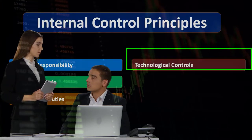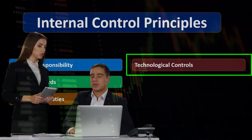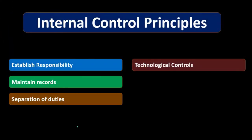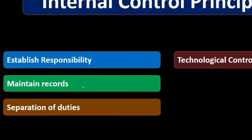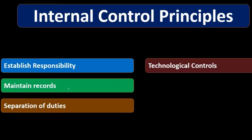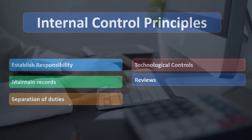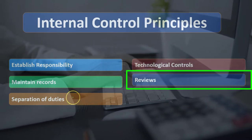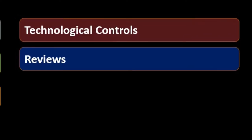Then we have technology controls. As we get more technology, systems of controls will change — we can separate duties more easily because the system allows it. We may have less of a paper trail, but we can set up systems within our database to have more of an audit trail. We also want reviews: once we have records and information, we want to go back and ask how we did and whether everything is functioning as it should.